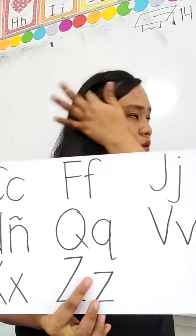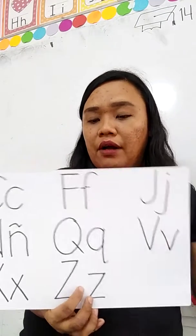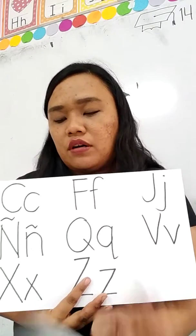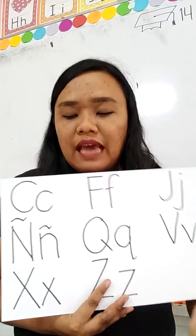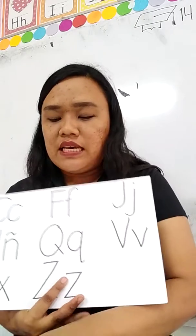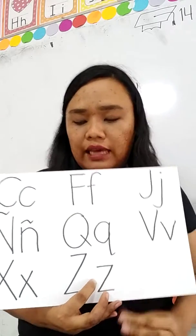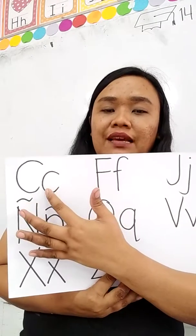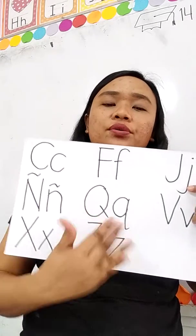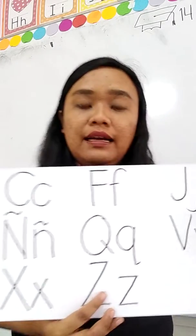Sa letter Q, ang ilan sa mga salita o pangalan ay Quezon, Quiapo, or Quirino. Sa letter V, meron mga Vera, Venice, or Vince. Sa letter X, meron tayong Savior at Xinya. Sa letter Z, medyo mas madalang, pero Zorro, Zenda, Zenaida. Ayan yung ating mga hiram na letra: C, F, J, Ñ, Q, V, X, Z.